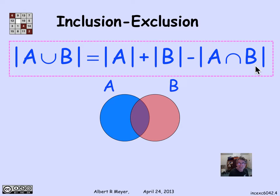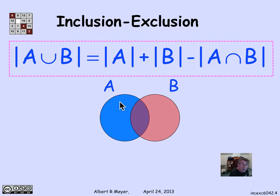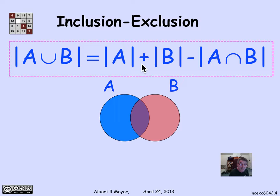The intuitive reason for that is that when you're adding up the elements in A, you're counting all the elements in the intersection once. Then when you add in the elements in B, you're counting all the elements in the intersection a second time. The ones in A minus B get counted once, the ones in B minus A get counted once, but the ones in A intersection B get counted twice. So to get the right count, you subtract the size of A intersection B so it's only counted once.